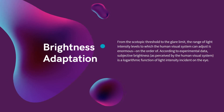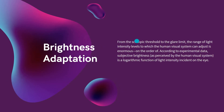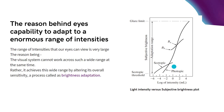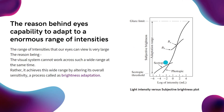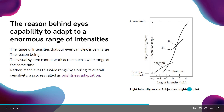Now coming to another interesting topic — that is brightness adaptation. As you can see in our daily life, you are able to perceive a wide variety of intensity levels in the world, ranging from the glare limit of the sun almost to a completely dark room. That is the beauty of the human eye. Here we are going to talk about the subjective brightness plot, which shows how your brain perceives brightness. We have a graph showing light intensity versus subjective brightness.